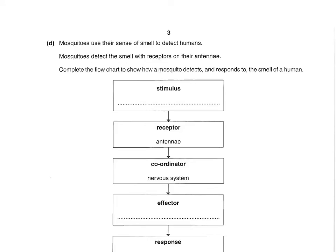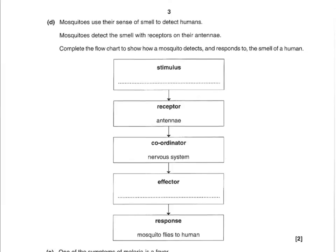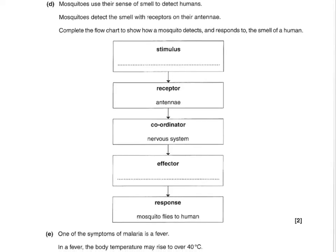Next question. Mosquitoes use their sense of smell to detect humans. Mosquitoes detect the smell with receptors on their antennae. Complete the flowchart to show how a mosquito detects and responds to the smell of a human. The first one — the stimulus — is the smell of the person, but you can just put smell. And then the effector is the wings, or the wing muscles. So that's what you get those two marks for.